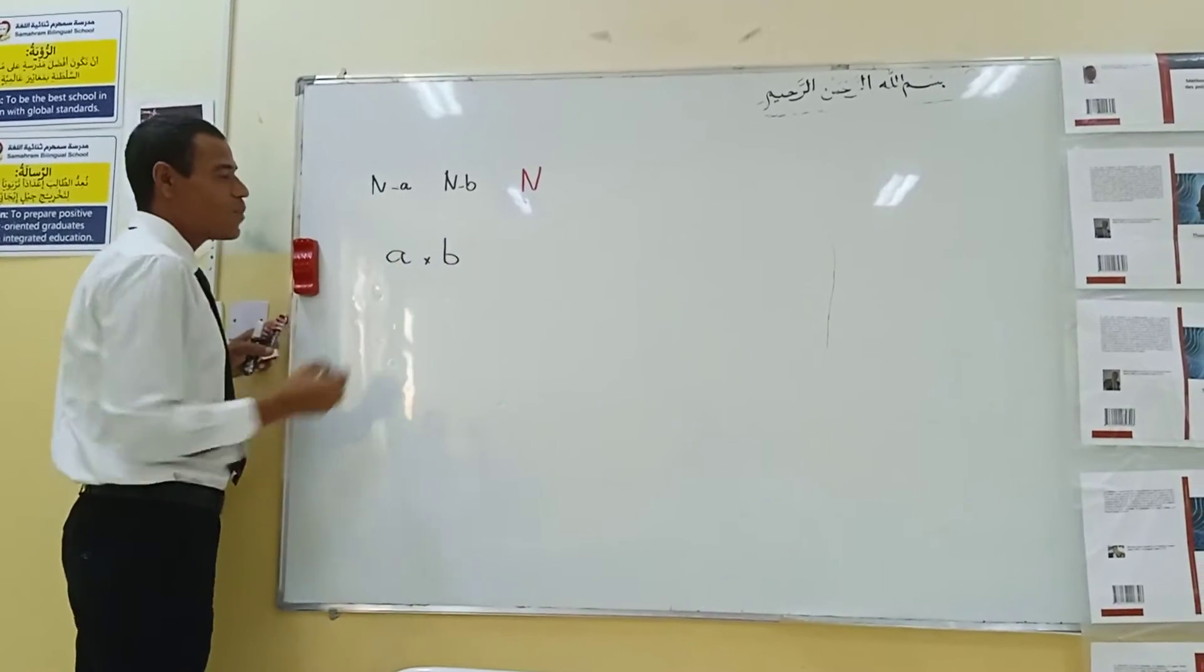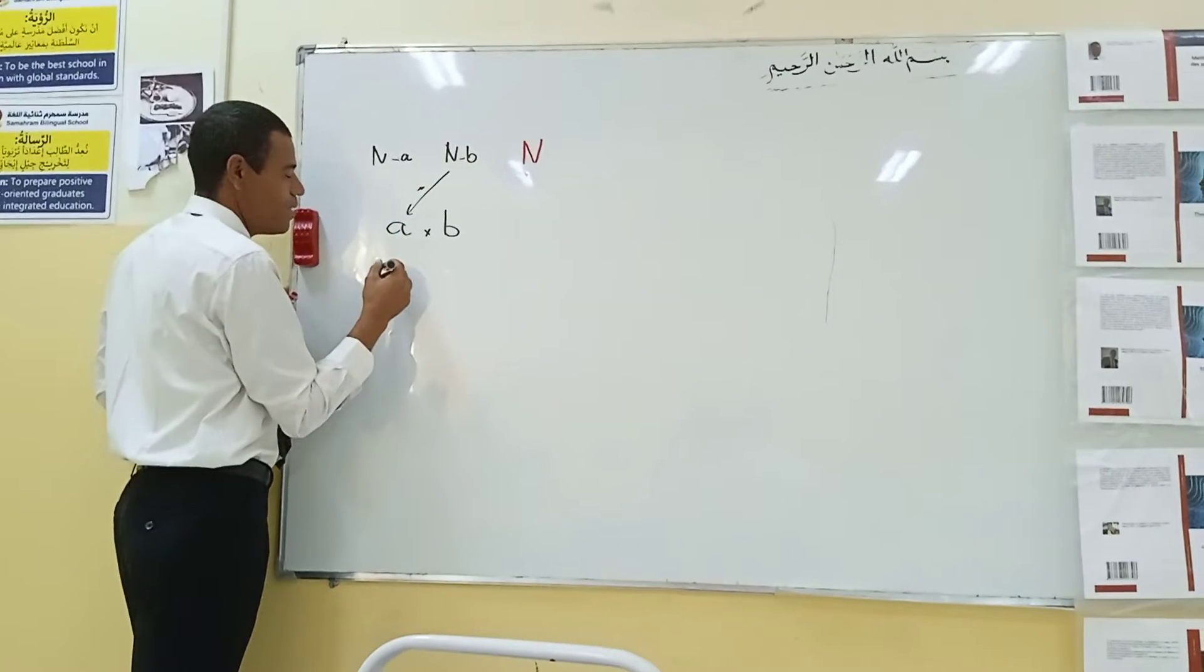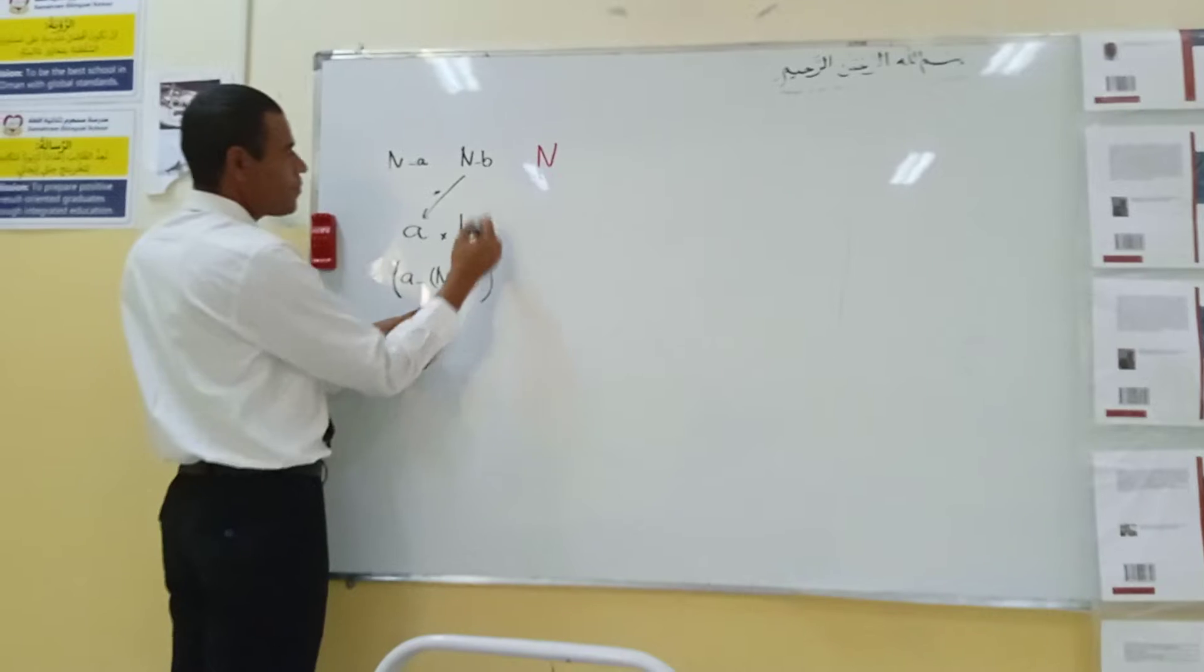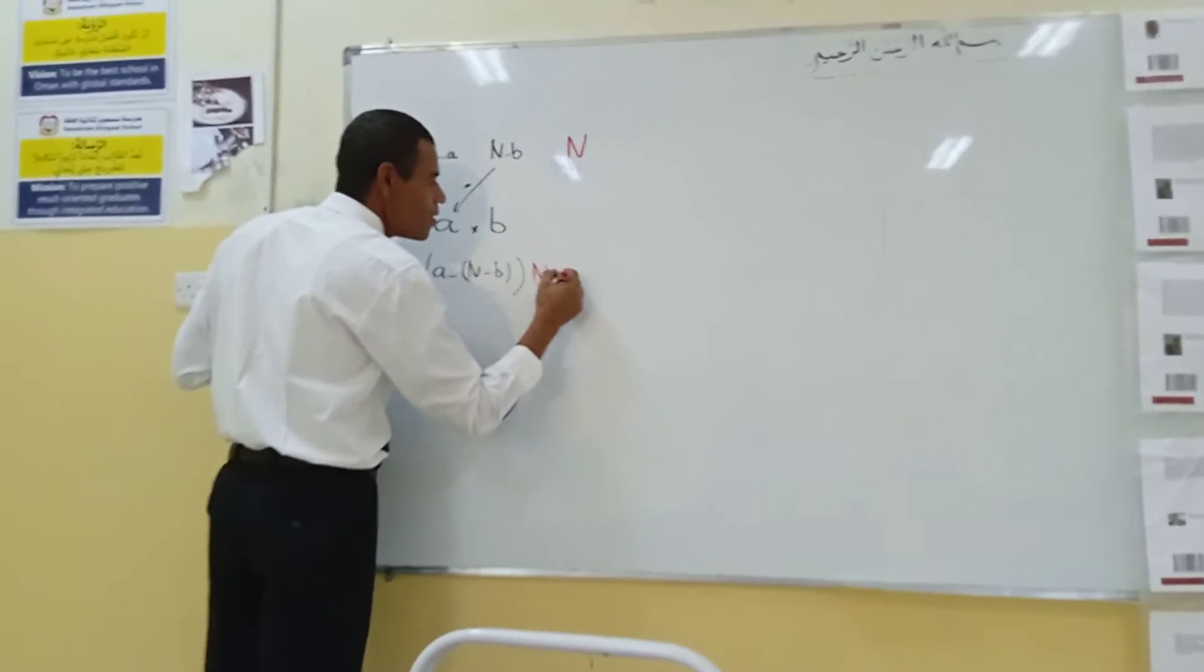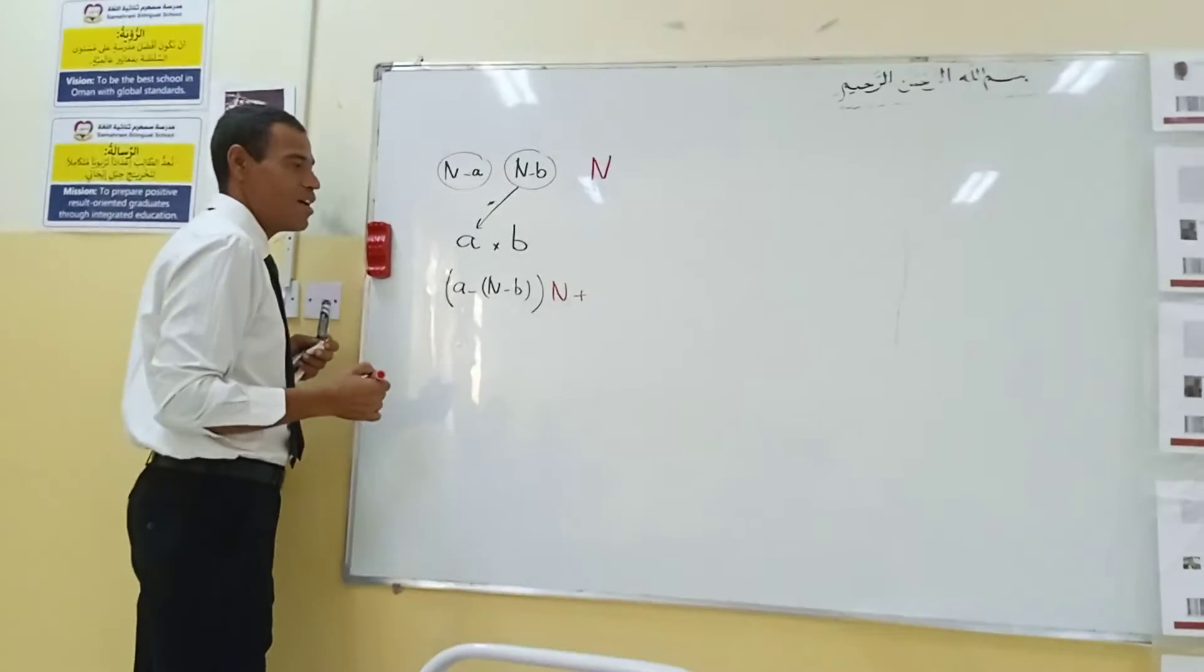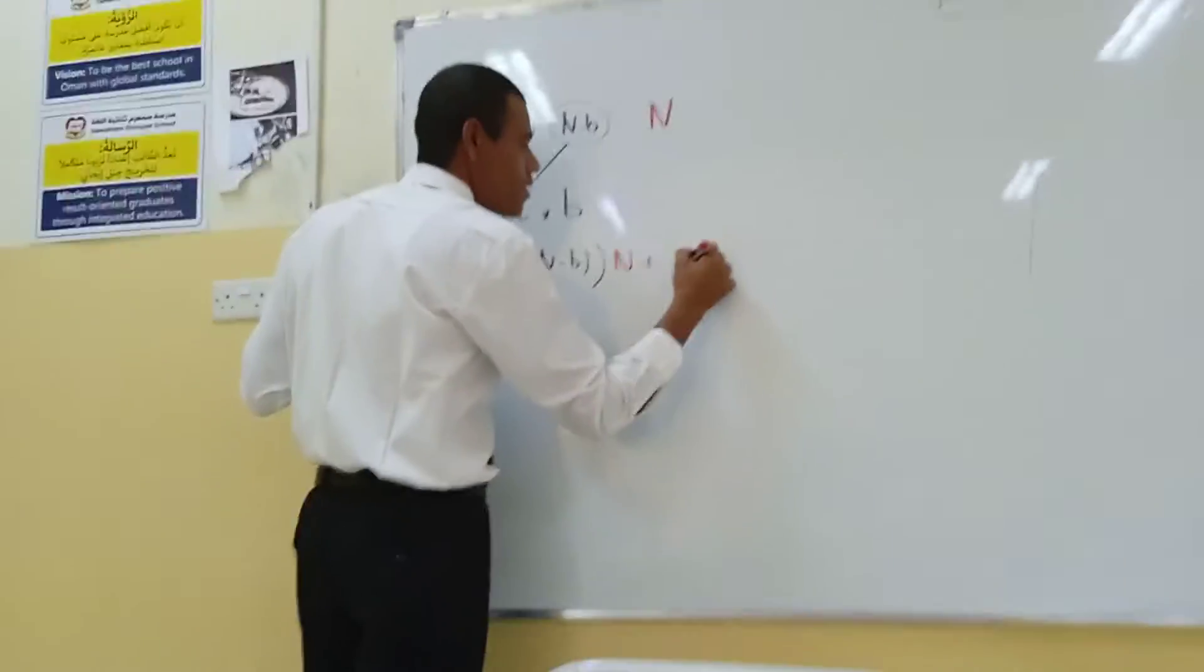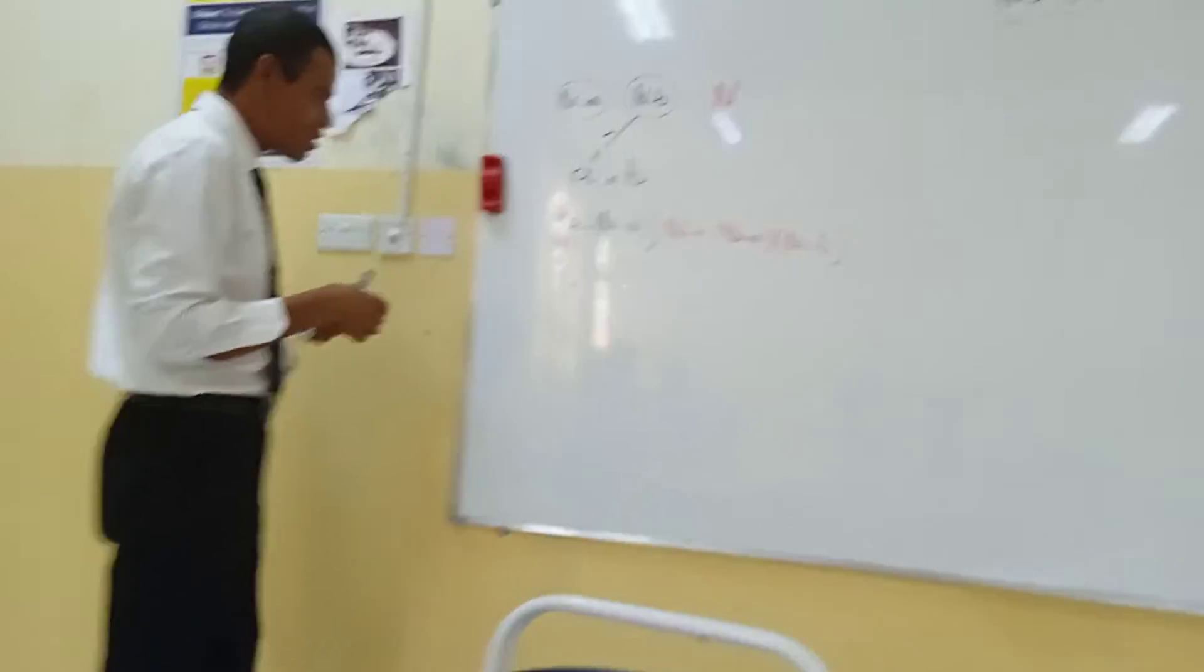So to find the product of A here, I will make A minus (N minus B), that will be A minus (N minus B) multiplied by the number N plus the product of these numbers. This is the formula. Plus (N minus A) multiply by (N minus B). Now we learn this.